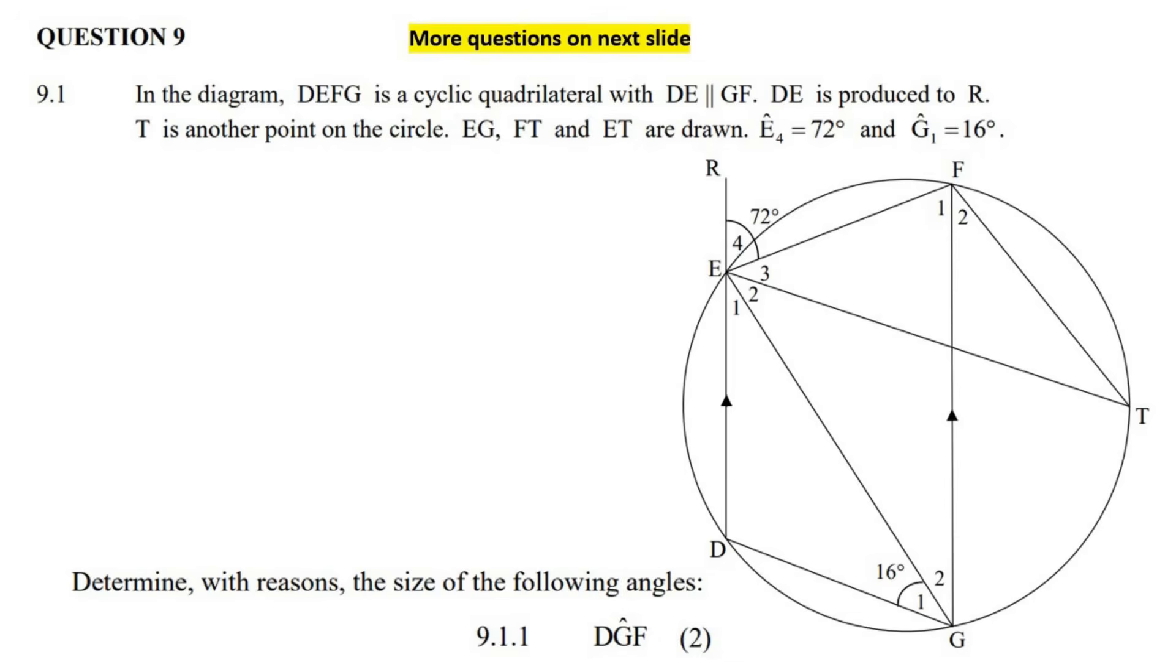So the first question says, determine the size for two marks, DGF. So that is this whole angle. So remember, now, I'll show you a mistake a lot of learners will make. A lot of learners will say that this 72 is the same as angle G_2, and they'll say tan chord theorem.